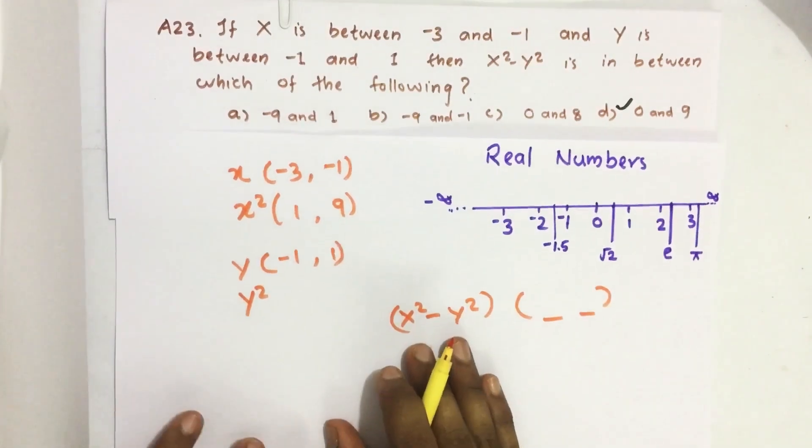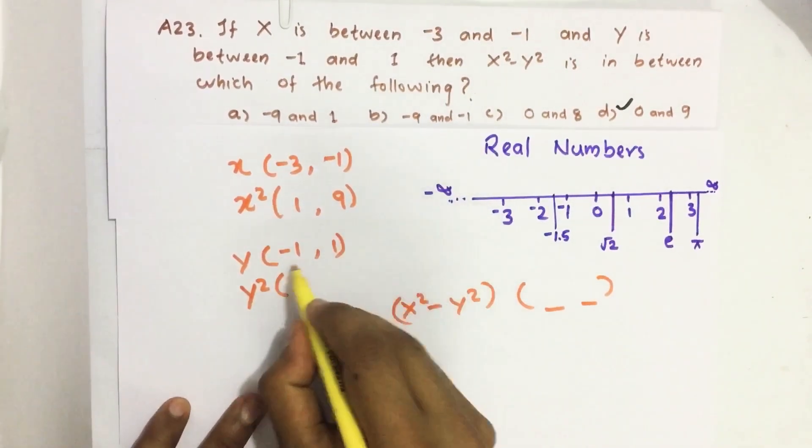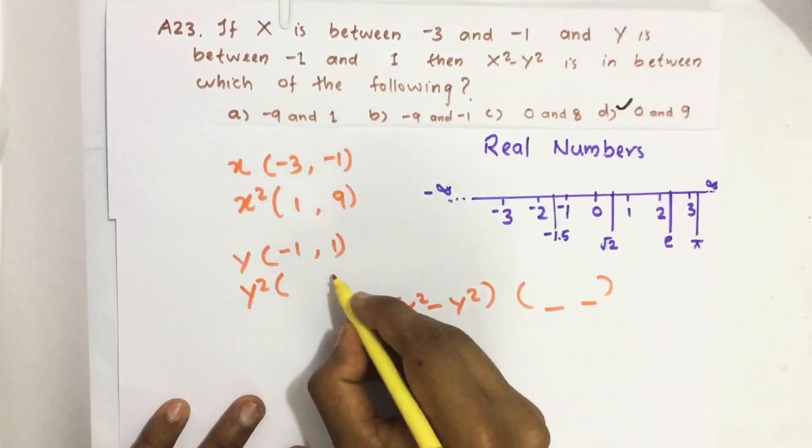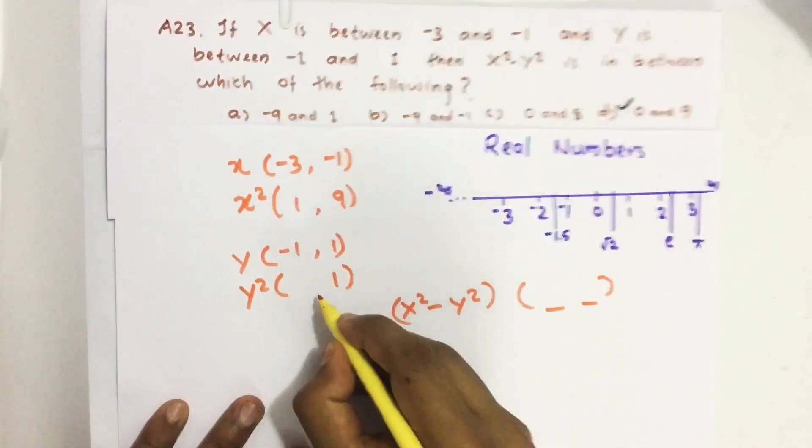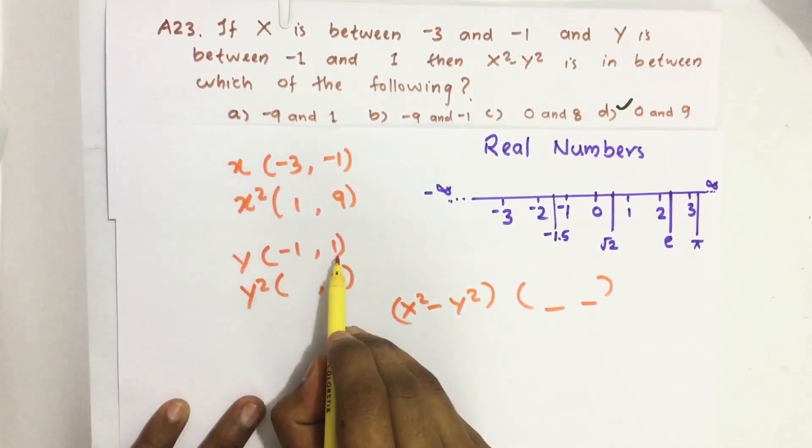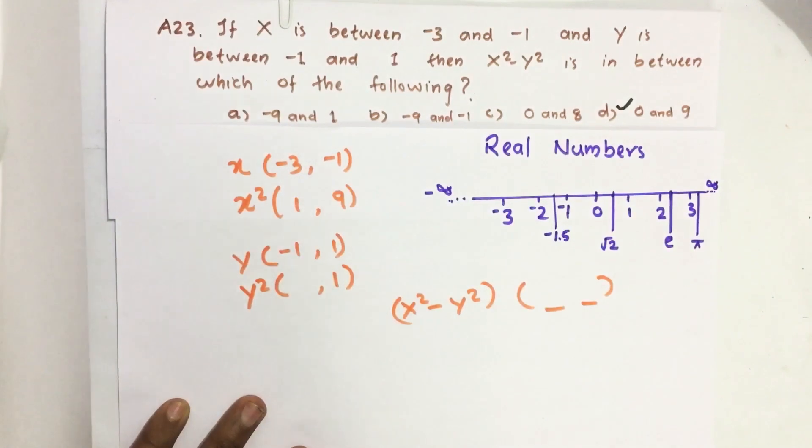Maximum it will be (-1)² or (1)² we get 1, and minimum, here y is in between a negative and positive number, therefore its square value always will be in between 0 and a positive number.